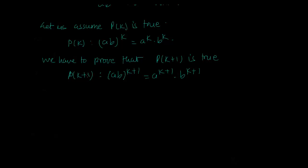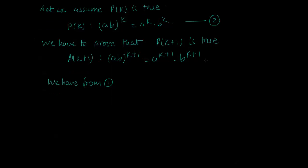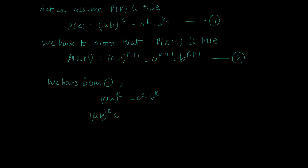From equation (1), we have assumed: (a·b)^k = a^k · b^k. That acts as a foothold. To reach P(k+1), I multiply both sides by (ab). So (a·b)^k · (ab) equals a^k · b^k · (ab), and the left side becomes (ab)^(k+1).